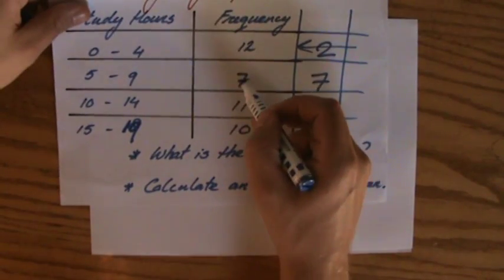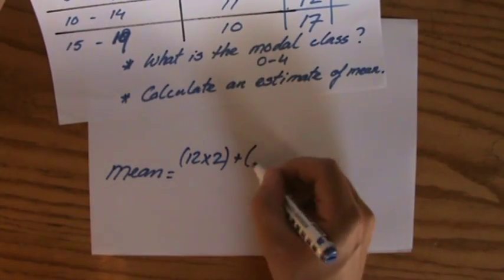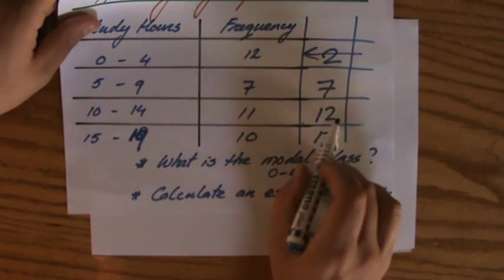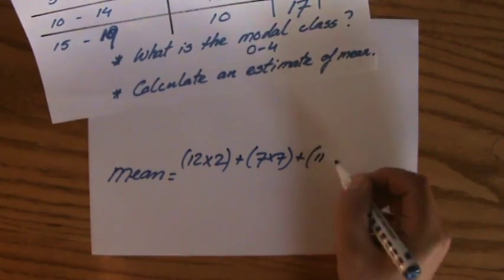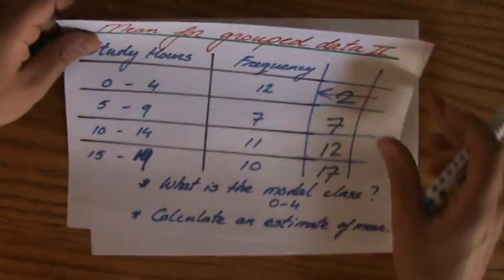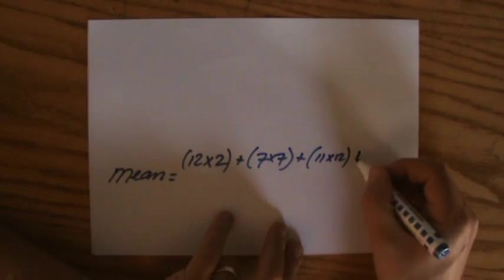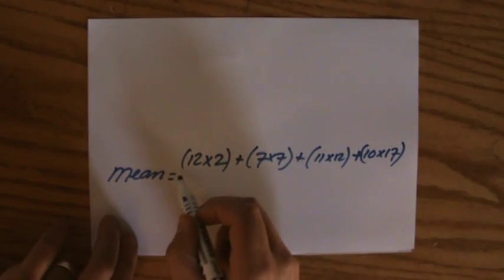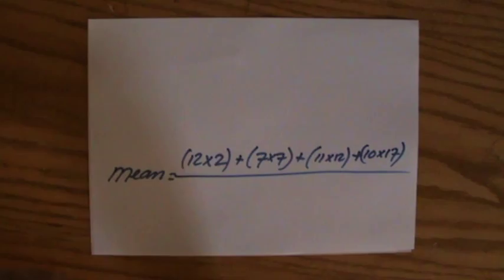plus the frequency 7 times, yeah, 7, that happens to be the same, plus 11 times 12, yeah, my frequency is 11, the mid value is 12, plus 10 times 17. And all of that divided by the amount of values.